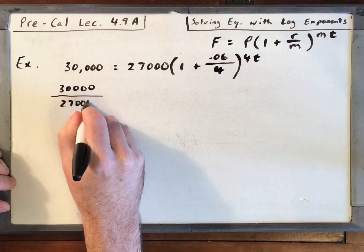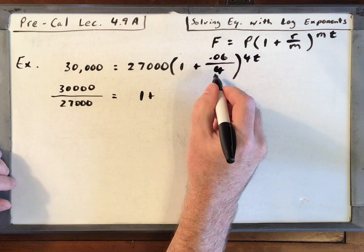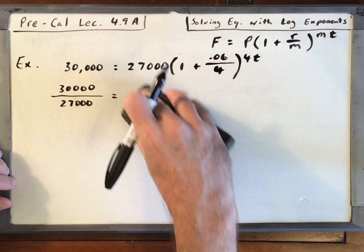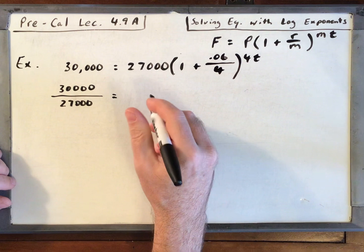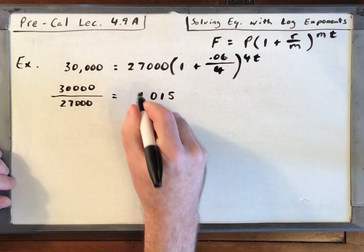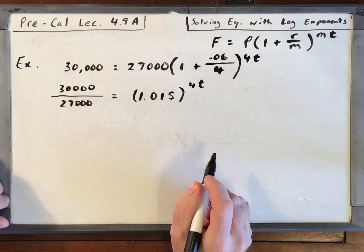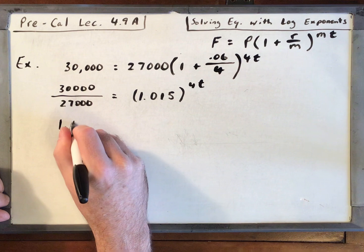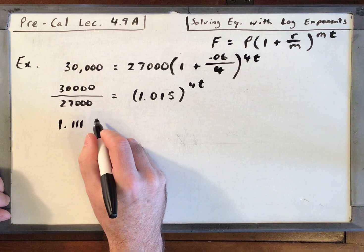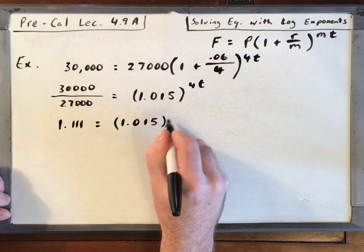What we want to do is bring that $27,000 underneath the $30,000. 1 plus 0.06 over 4, I'm going to go ahead and put that as a decimal. So if you put 1 plus 0.06 over 4 in your calculator, it's 1.015. Take it out at least three decimal places to the 4T. 30,000 over 27,000 is 1.111. Don't round too much, that one goes forever, but three decimal places should be enough.